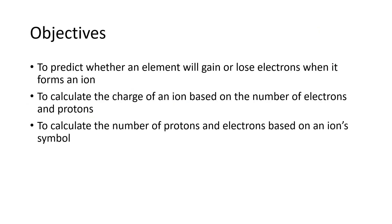Our objectives were to predict whether a given element will gain or lose electrons when it forms an ion. Nonmetals gain, metals lose. To calculate the charge of an ion based on the number of electrons and protons, we're going to subtract those two numbers. If we have more electrons, it's a negative charge. If we have more protons, it's a positive charge. And then to calculate the number of protons and electrons based on an ion symbol, if we have a negative charge, it means that we've picked up extra electrons. And if we have a positive charge, it means that we have lost electrons.